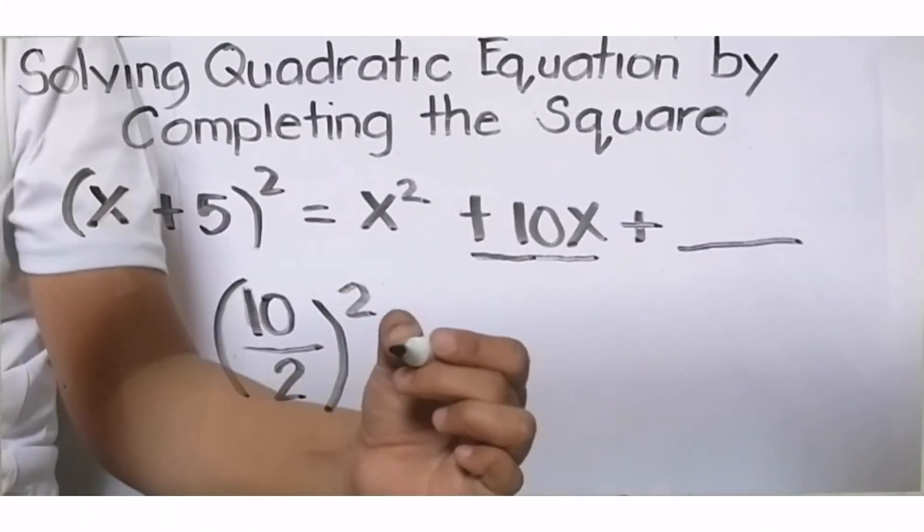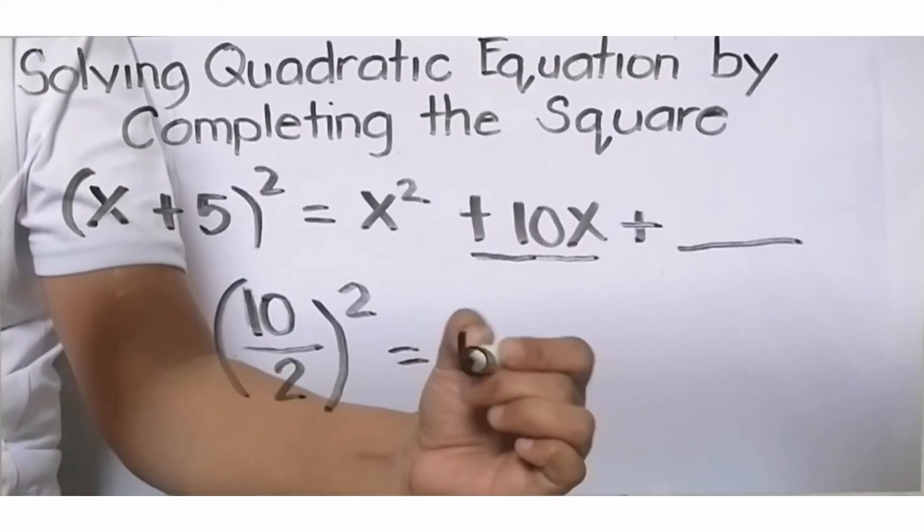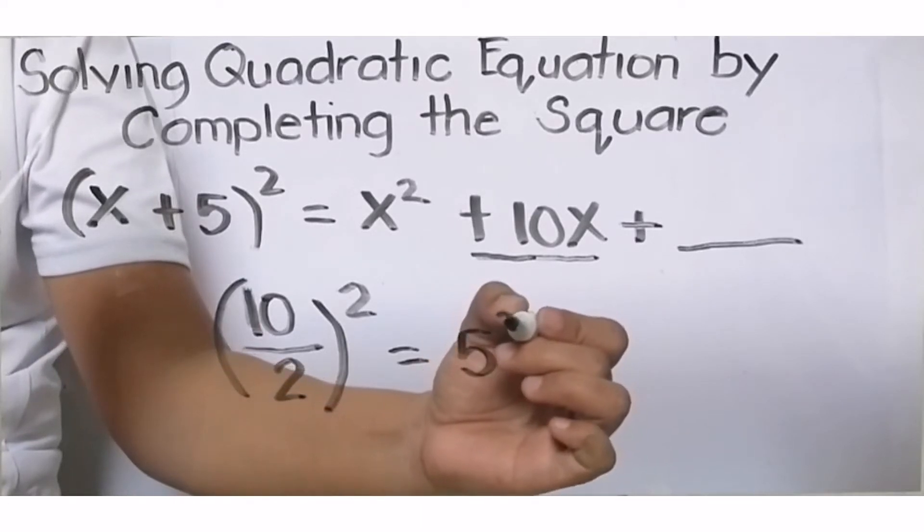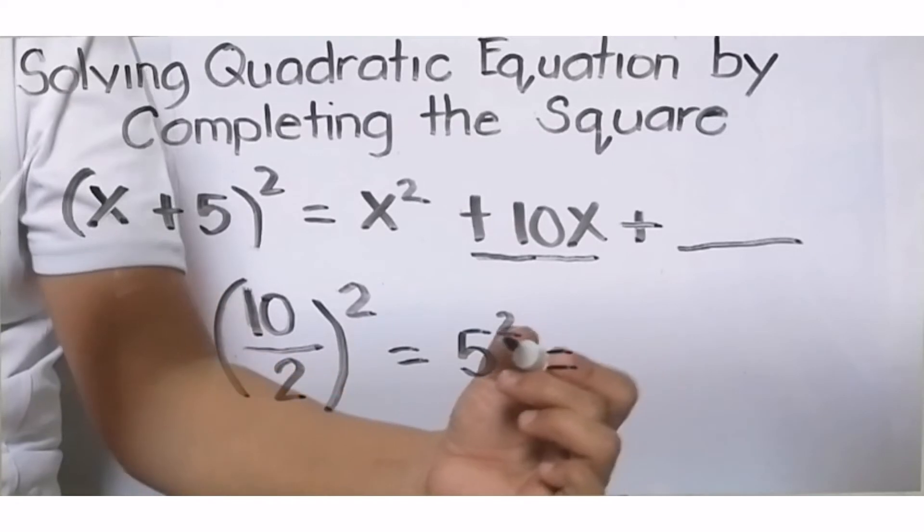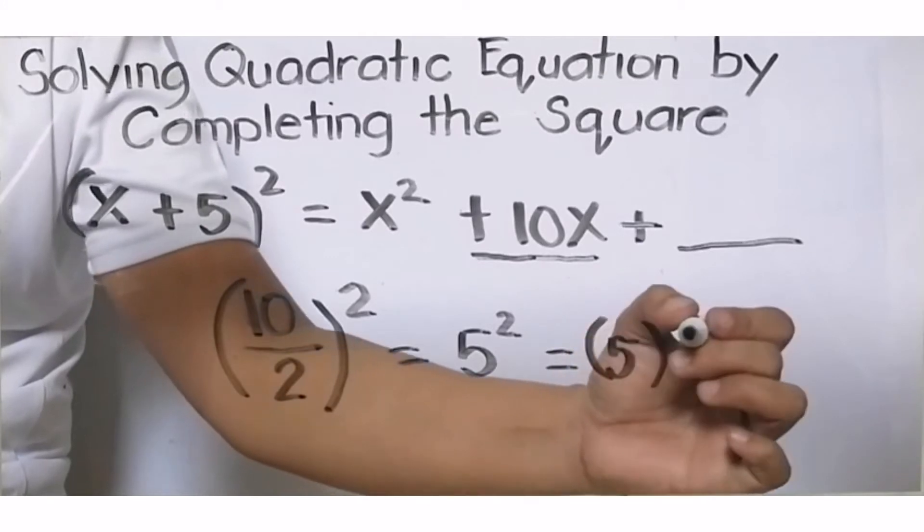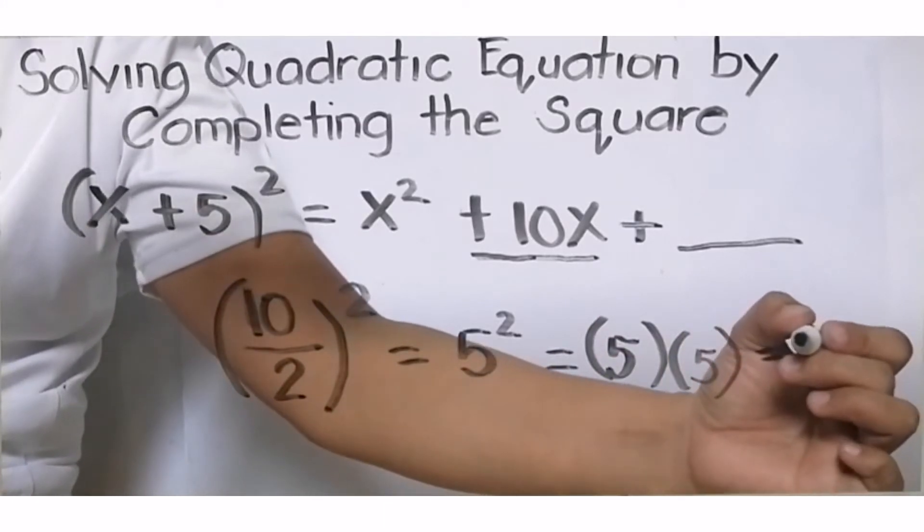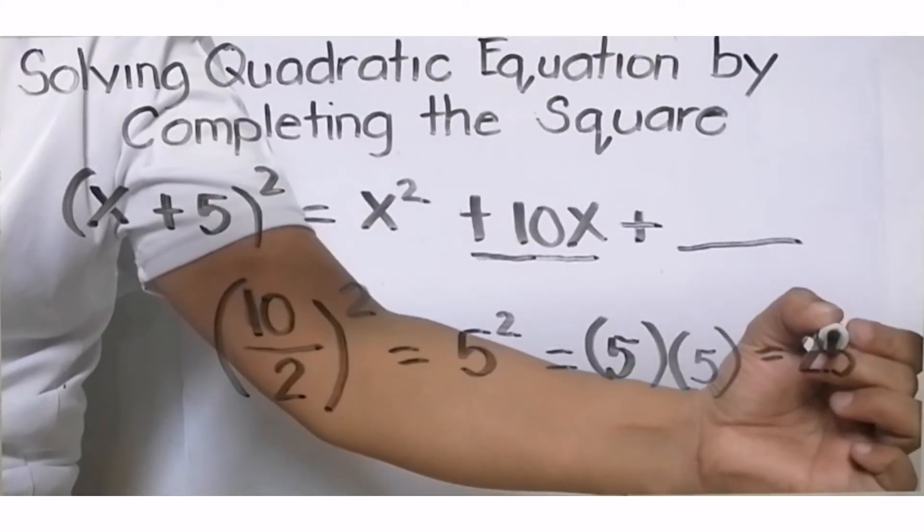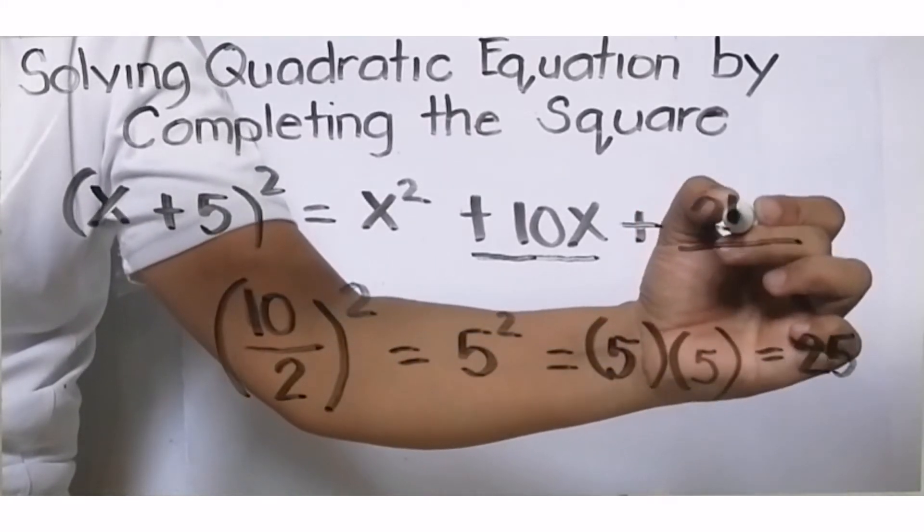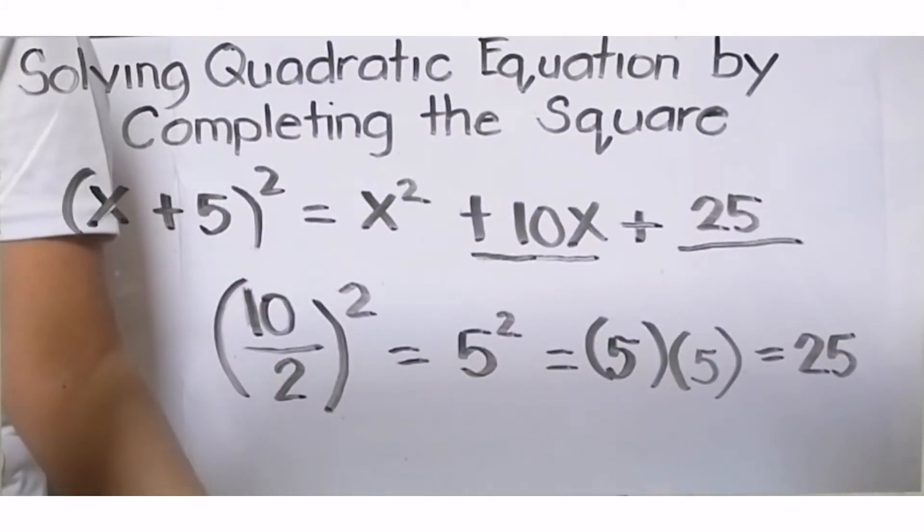Ready? 10 divided by 2 is 5. Square that 5. The square of 5 means two 5s multiplied together. What is 5 times 5? That's 25. So the answer here is 25. Why did we do this? Because later, we will need this process in solving our quadratic equation. We will solve the quadratic equation by completing the square.